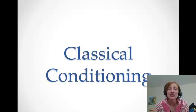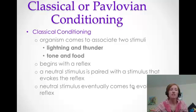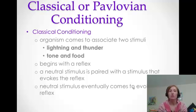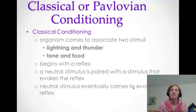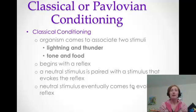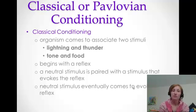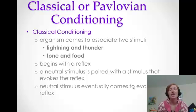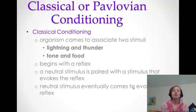Today we're going to be learning about classical conditioning. What it means is that an organism comes to associate two stimuli together — like lightning and thunder. We see lightning and anticipate the thunder. It starts with something that happens naturally, like salivation from food. A neutral stimulus — one that doesn't mean anything — is paired with a stimulus that evokes a response, and eventually comes to evoke that reflex on its own.